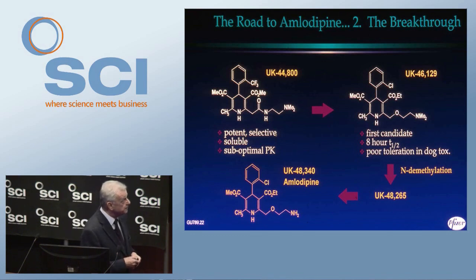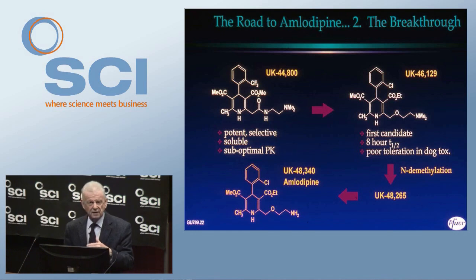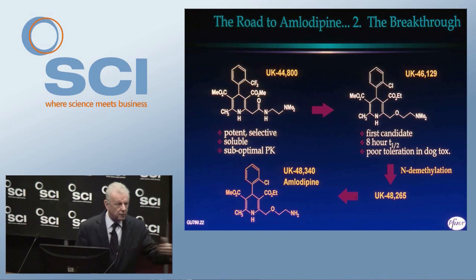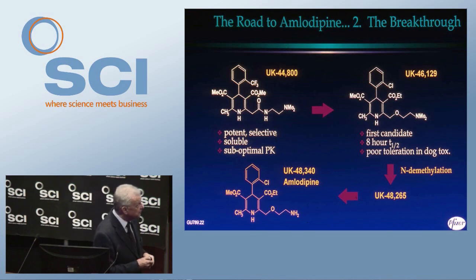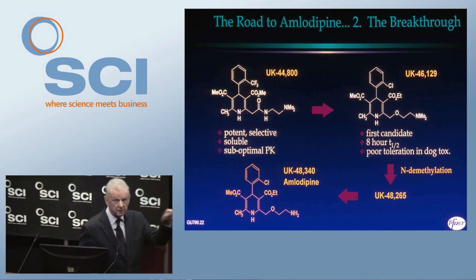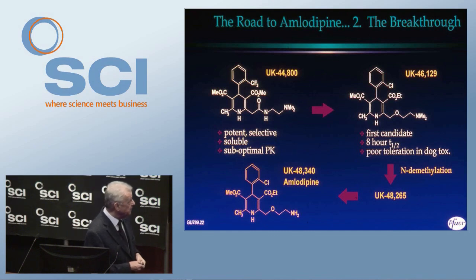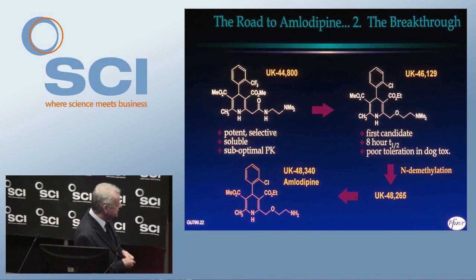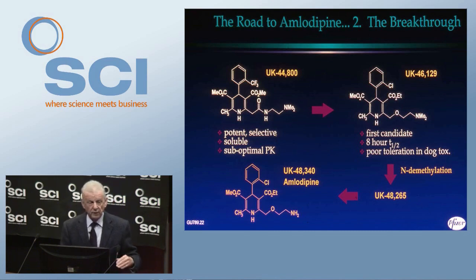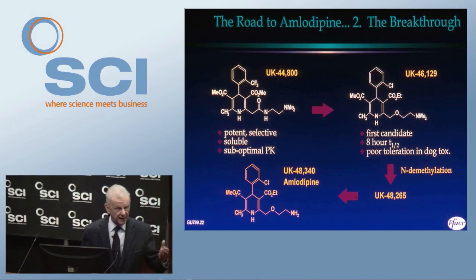However, compound 46129 was very poorly tolerated in the dog. People from drug metabolism told us that one of the methyl groups was being N-demethylated by an enzyme, generating a compound with an NH methyl group that was building up — we were accumulating a metabolite that was causing the problem. We then decided to work with the metabolite, but had a similar problem. So finally we nominated UK-48340 as our candidate. The only metabolism that can happen here is that the two hydrogens are oxidized to give the pyridine, which is pharmacologically inactive. So we're having metabolism but going to an inactive species, which makes things much more simple.